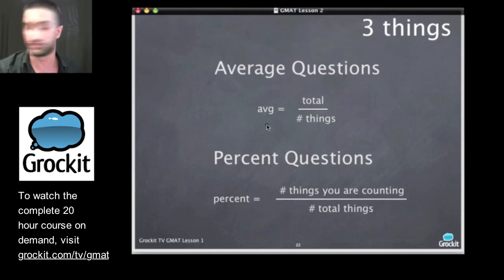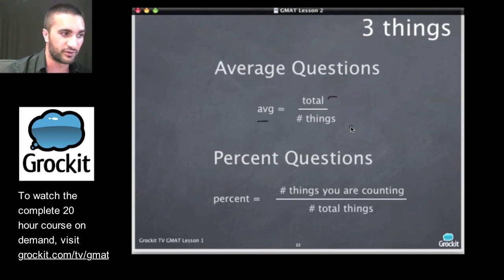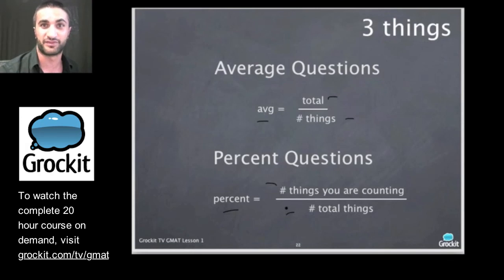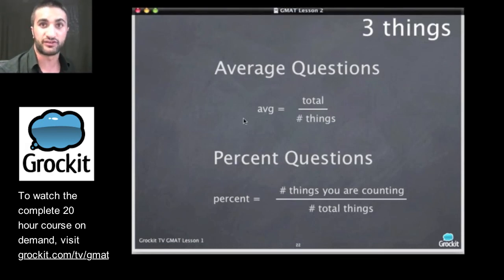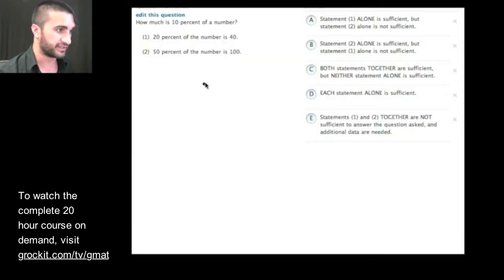But remember, these questions always involve three things. So whenever you're working on an average, there's three things. There's the average. There's the total. And then there's the number of things. When you're working on percents, there's the percent. There's the number of things you're counting. And the total number of things. Remember, information management challenge. Keep track of the number of things you need and keeping track of the number of things you have so that you know how many things you don't have and so you know what you can figure out. And the GMAT loves questions with averages and percents and rates because they're great examples for information management challenges. So let's just go ahead and jump in and take a look at some examples of these.